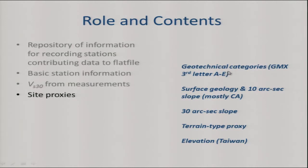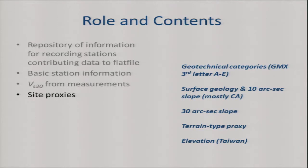The proxies we've included are: geotechnical categories — the Geometrics third letters, going from A (fairly firm rock) up through E (soft soil); surface geology; and since NGA West 1, there has been an update in the California surface geology-based VS30 estimation in which surface geology is combined with slope measured on a 10 arc-second grid. This is work out of the California Geological Survey — Chris Wills and Carlos Gutierrez. The slope is used mainly for quaternary sites; for others, it's just geology categories, and there is a VS30 for each one.